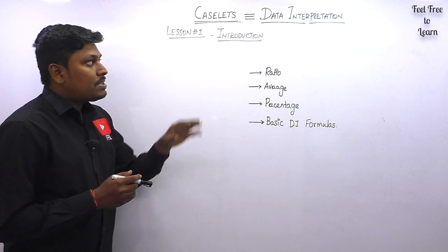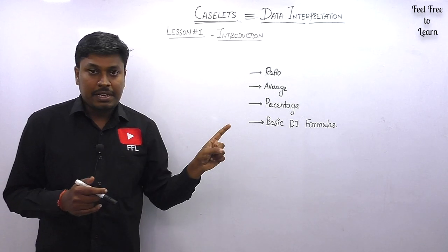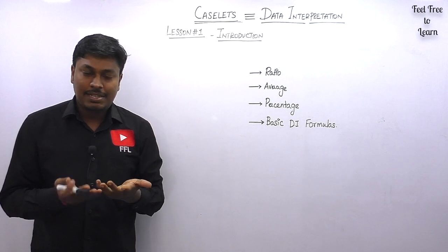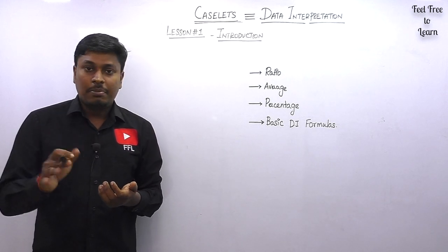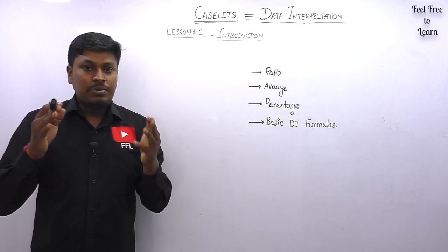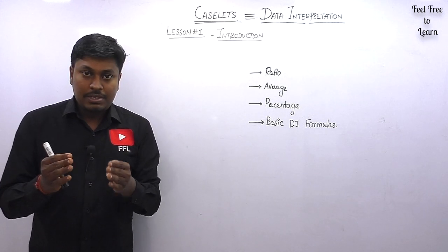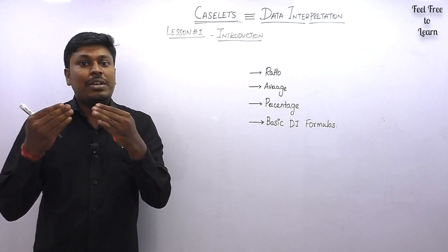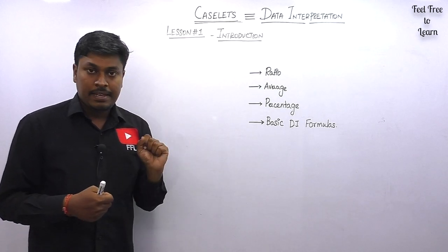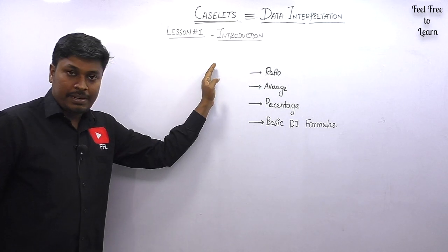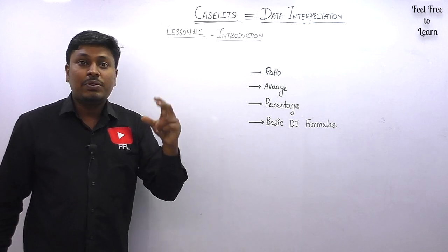The difference between DI and caselet is: in data interpretation, they give you a chart — it can be a pie chart, table chart, or bar chart — and under that chart you will have five questions. You need to refer to the chart and solve all five questions. This is called DI.